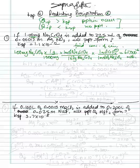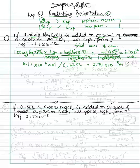Here's the volume. So 6.17 times 10 to the negative 6 moles of the chromate ion divided by 0.225 liters — convert that into liters to calculate molarity. That gives 2.74 times 10 to the negative 5 molar, and that is your chromate ion (CrO₄²⁻) concentration.